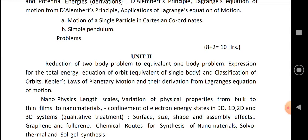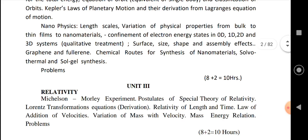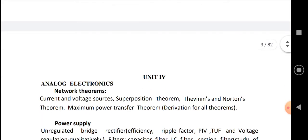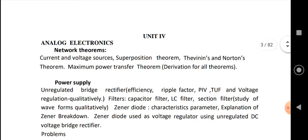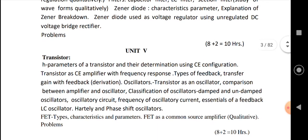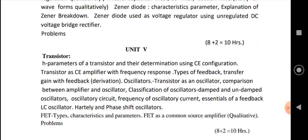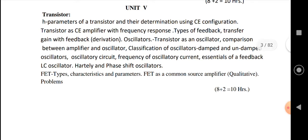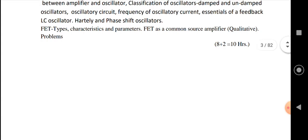In the second unit they have also included nanophysics — some basic concepts of nanophysics. In the third unit there is the theory of relativity. The fourth unit is related to electronics: analog electronics, network theorems, and power supply. The fifth unit covers transistors. That is all about the paper one syllabus.